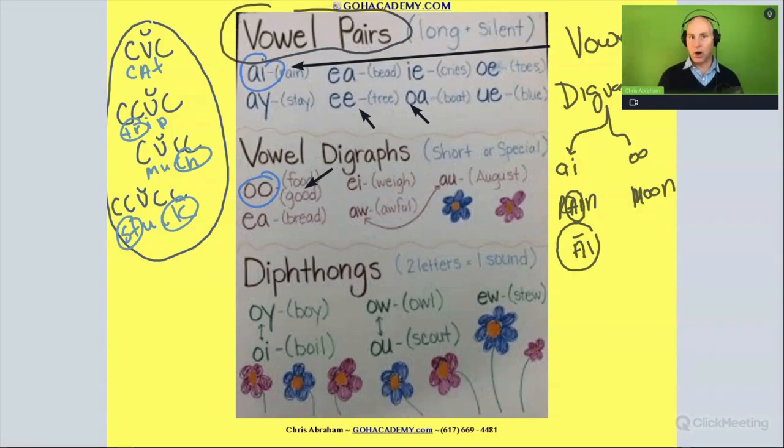So vowel pairs are vowel digraphs. It's a type of vowel digraph, two vowels that make one sound, where the first vowel is always long. Long A, long E, long I, long O, long U in blue. It's always long. So that's the difference between a digraph and a diphthong, a vowel digraph and a vowel pair. A vowel pair is a type of vowel digraph, but it's a type of vowel digraph where the first vowel is long and the second one's silent. And these other ones here are just vowel digraphs, two vowels that make their own sound, one sound.